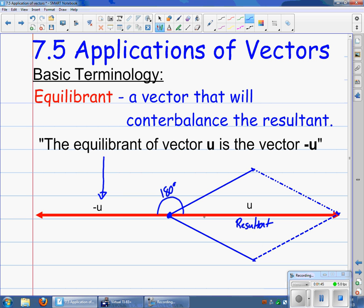in order to counterbalance or zero out this resultant, it would have to have the exact same amount of force just being applied in the opposite direction. So the magnitude of u is equal to the magnitude of the opposite u. So that's the two pieces of information there. The magnitudes of the resultant and the equilibrium are the same, and they're 180 degrees apart.